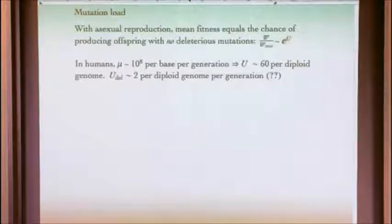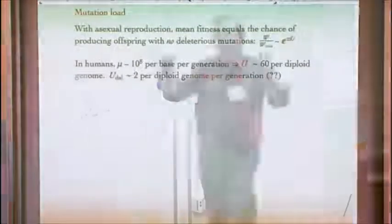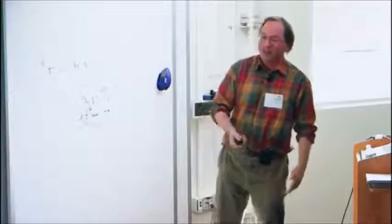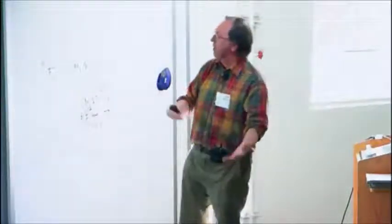You basically find that the actual fitness of the fittest type times the probability of producing an identical offspring, which if we assume a Poisson distribution of mutations with total rate big U, that is W times e to the minus U, that has to equal the average fitness of the whole population, which in the long run will be around one. It's a simple argument, but it's also a wrong argument. I'm going to say what's wrong in a minute. I'm allowed to have false arguments and then correct arguments.